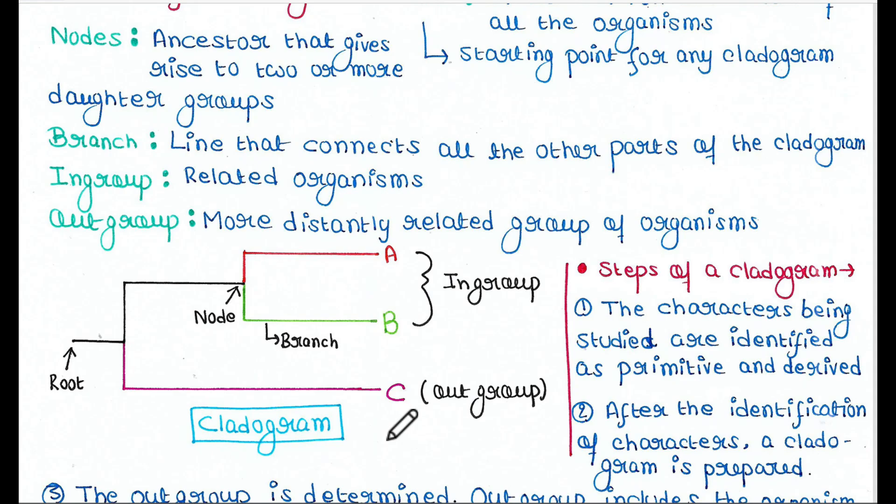And C is not similar with A and B. It is more distantly related to A and B. It is called out-group. And these are branches. And last is this node. In this picture, there is only one node. This is basically the node.